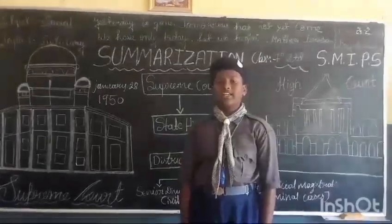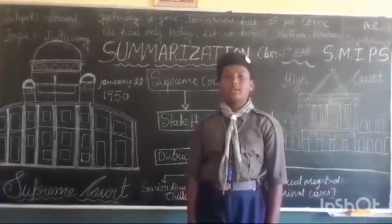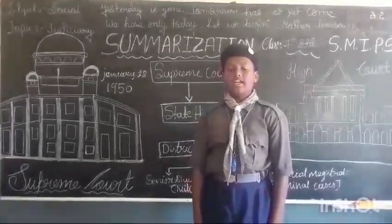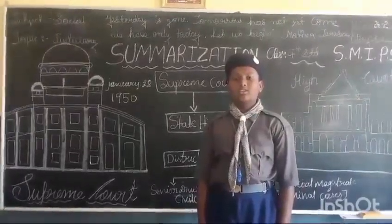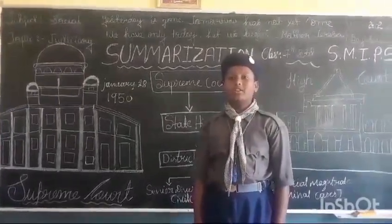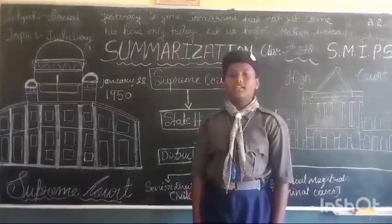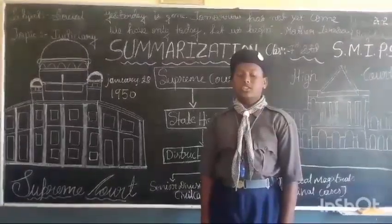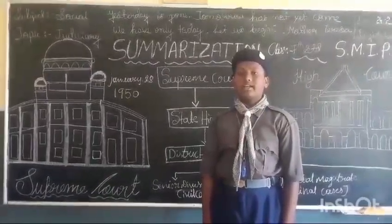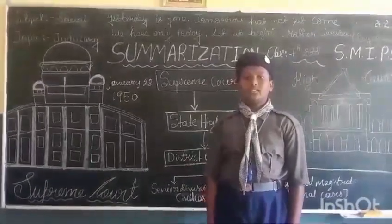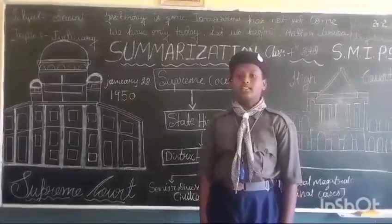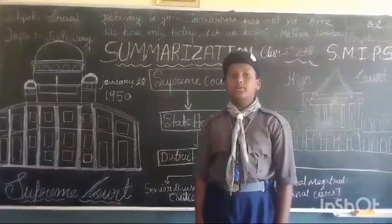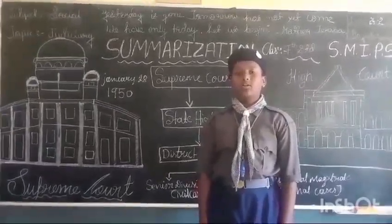The Civil Procedure Code of 1908 and after independence, the structure and scope of the subordinate courts have been included in the Constitution. Subordinate courts differ from state to state, but their main features remain the same. The courts are of two kinds: civil court and criminal court.